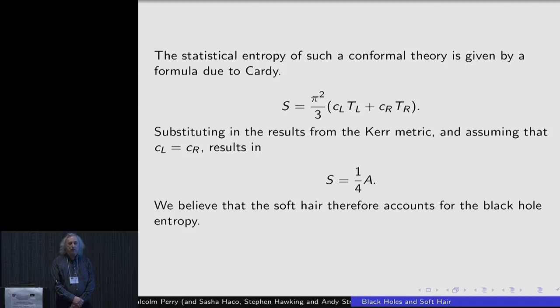Let's suppose that C_L is equal to C_R is equal to 12J, that T left and T right are given by the quantities that we had a little bit earlier. Then we can calculate the statistical entropy of the two conformal field theories which we would say are living on the horizon. And then from a general result of Cardy, you know that the entropy is equal to pi squared over 3 times C left T left plus C right T right. These we all know from a knowledge of the Kerr metric, and assuming that C_L is equal to C_R, you just plug things in and discover the area over 4 is equal to the statistical entropy of these conformal field theories.